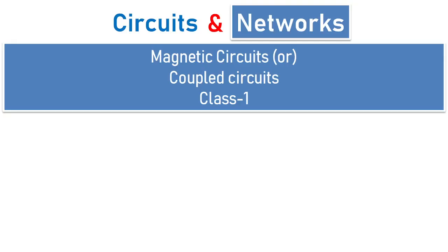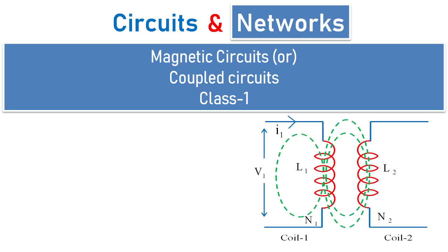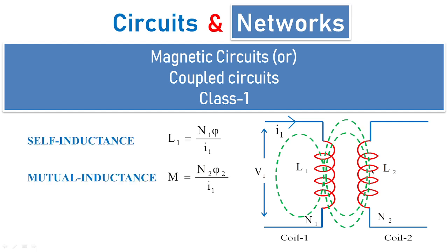Hi, welcome to another session of circuits and networks. In today's class 1 under coupled circuits, also known as magnetic circuits, we are going to see basics which are involved with two coils and how to obtain self inductance, mutual inductance, and coefficient of coupling for a given two circuits which are placed parallel to each other.